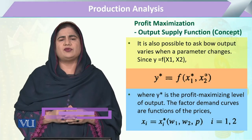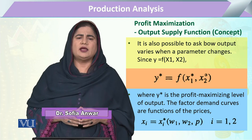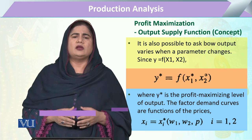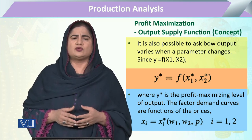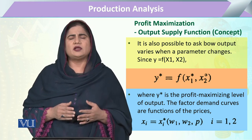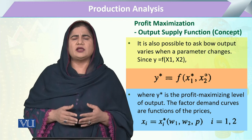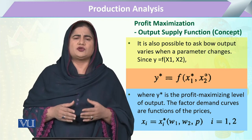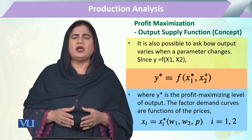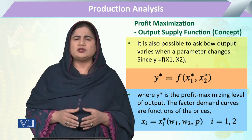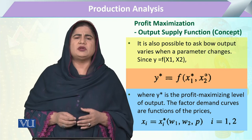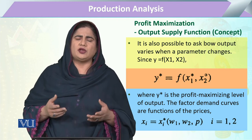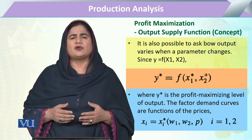The output supply function tells us how much a firm will be able to supply in the market when facing various factors related to the price of the output and the price of the inputs, because these are the limiting factors for a firm to produce. At the same time, when the firm has to maximize its profit and output, we calculate how much output will be supplied in the market depending on conditions where input prices or output price may change.